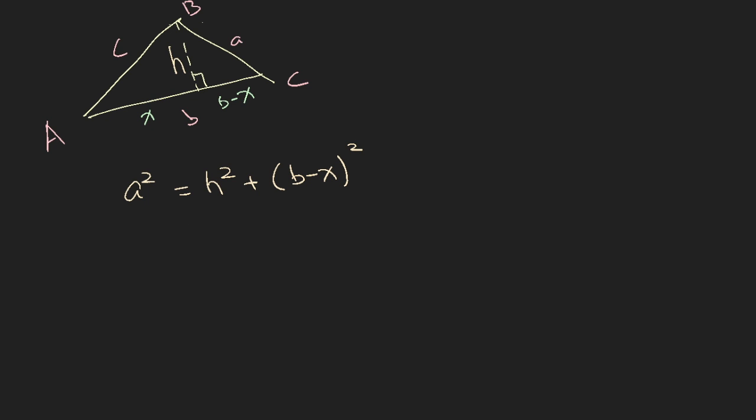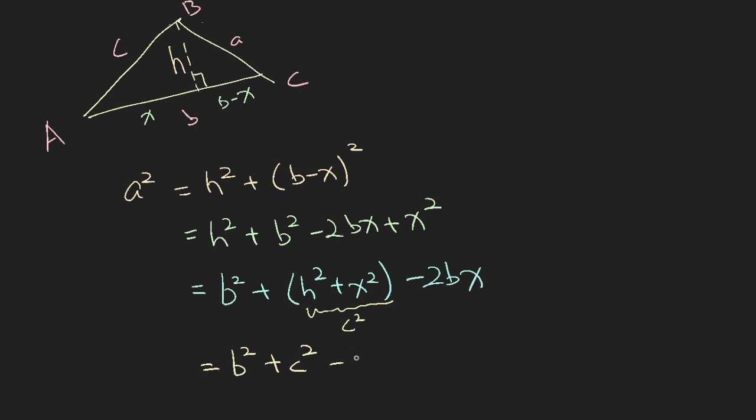Now if we open out the bracket, we will have equals to h² plus b² minus 2bx plus x². Now if you rearrange this, you will have b² plus h² plus x² minus 2bx. Now from here, you can see clearly that h² plus x² is c², because this is also a triangle and c is the hypotenuse of this triangle. So using Pythagoras theorem, this is actually c². c² equals h² plus x².